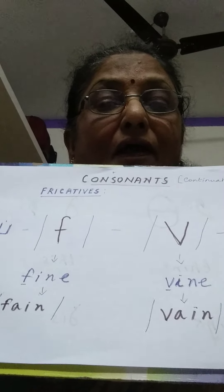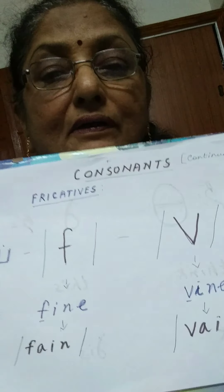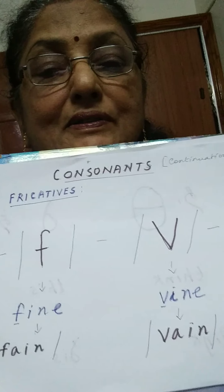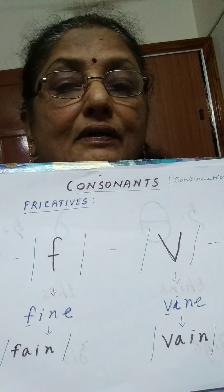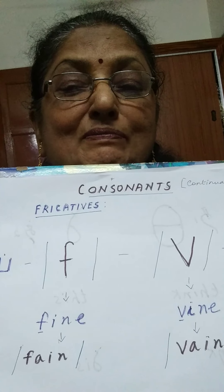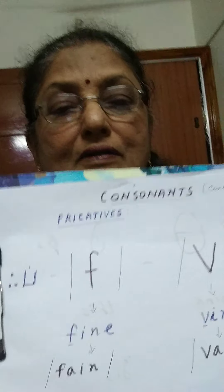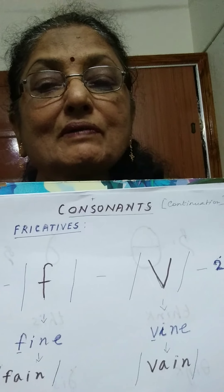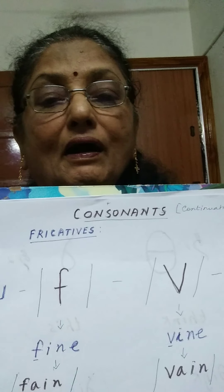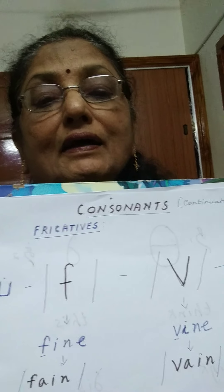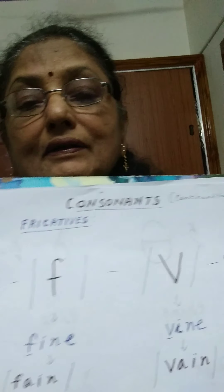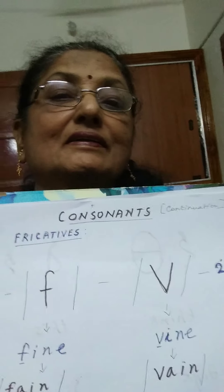Example: 'fine' and 'wine.' For 'fine,' we put the /f/ symbol, then the /aɪ/ diphthong, then N. N is the symbol for the /n/ sound. Similarly, for 'wine,' we put V first, then the /aɪ/ diphthong, and then N for the /n/ sound.